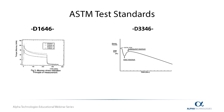ASTM D1646 covers the test methods for measuring Mooney viscosity, Mooney stress relaxation, and Mooney scorch. Mooney viscosity and stress relaxation are typically run on the polymer, giving some insight into the polymer viscosity and elasticity. Mooney scorch is run on the compounded rubber, providing information on the initial rate of cure and the amount of scorch safety time.